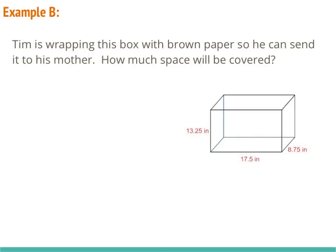In example B, Tim is wrapping this box with brown paper so he can send it to his mother. How much space will be covered? Since we're figuring out how much space needs to be covered and not how much it holds, this is a surface area problem. So looking at our formula sheet, the surface area formula for a rectangular prism is 2 times length times width, plus 2 times length times height, plus 2 times width times height.